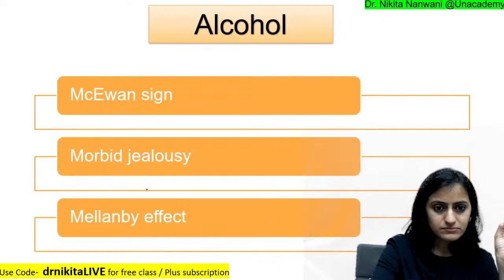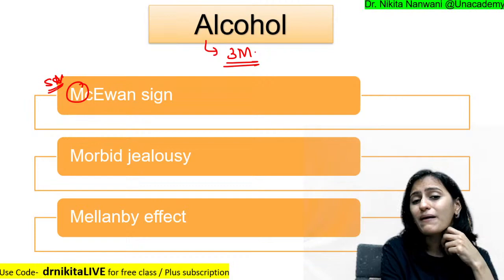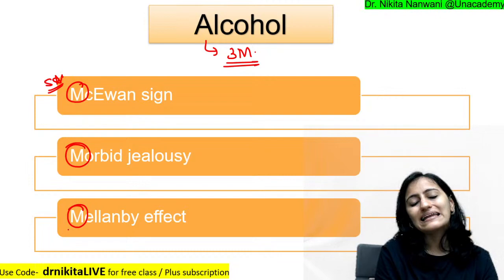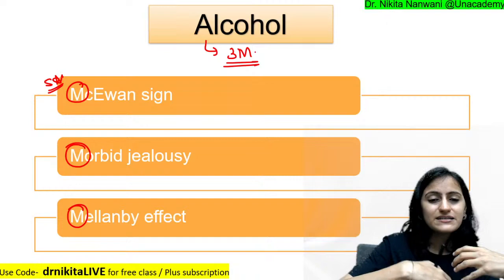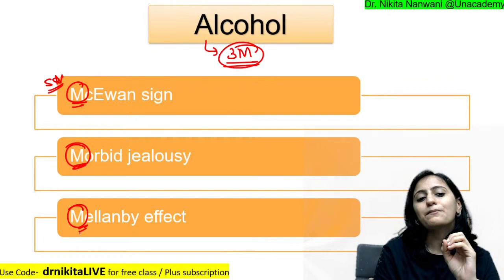Alcohol: remember the three M's. Mac Evans sign — when you pinch the neck, the pupil dilates. Morbid jealousy, also called Othello syndrome. And Malin B effect — when alcohol levels are increasing initially, there is more effect, but as tolerance develops, less effect. So the three M's with alcohol: Mac Evans sign, morbid jealousy, and Malin B effect.